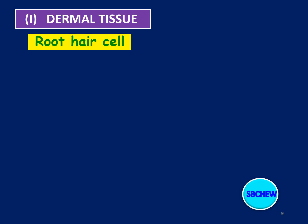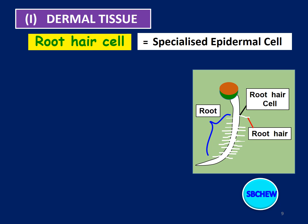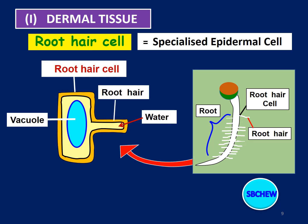Let us look at an unusual type of cell in the dermal tissue — it is called the root hair cell. The root hair cell is a specialized epidermal cell that has changed in structure so that it can carry out its function more efficiently. Here is a picture of a seedling which has grown a root. In the root, there are many root hair cells which have grown root hairs. As you can see, the root hair cell has grown a long projection called a root hair. This root hair cell increases the surface area of the root so that it can absorb water more quickly.